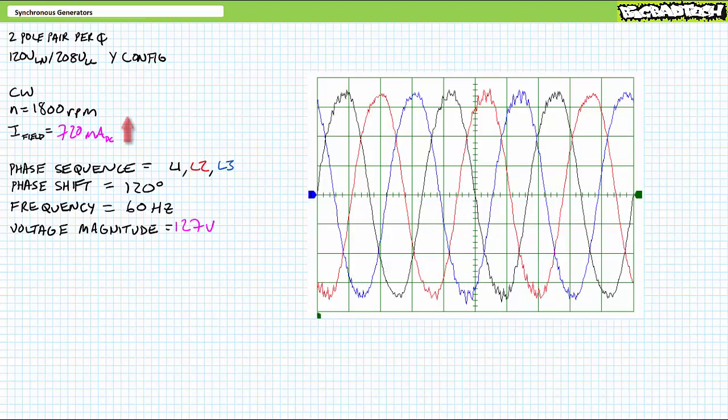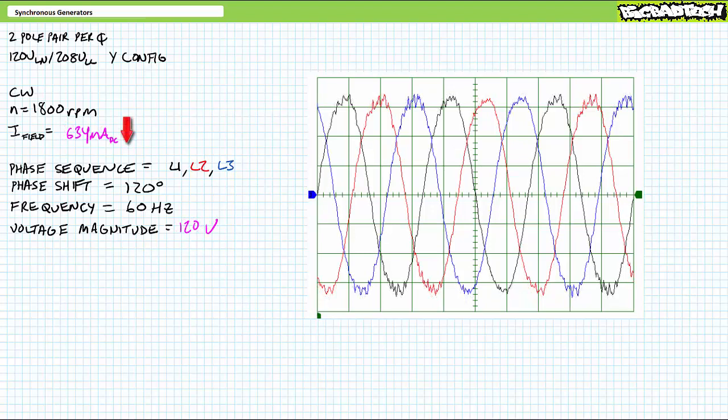Way too much. At 720 milliampers of field current, voltage magnitude rises to 127 volts and frequency remains 60 hertz. We've overshot our desired voltage magnitude. Let's dial field current back a bit. At a reduced 634 milliampers of field current, voltage magnitude drops back to our desired 120 volts and frequency remains 60 hertz.